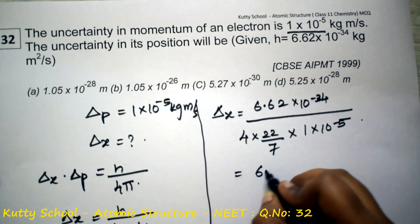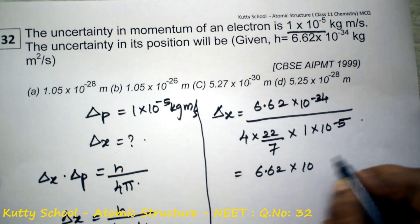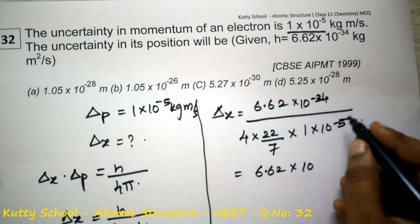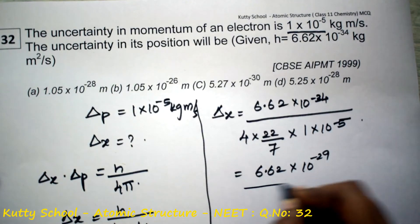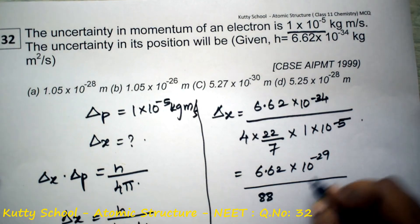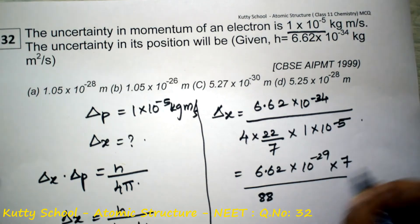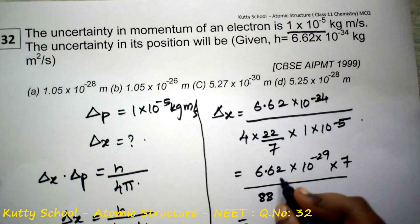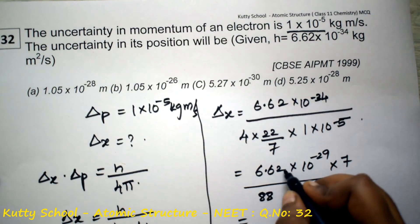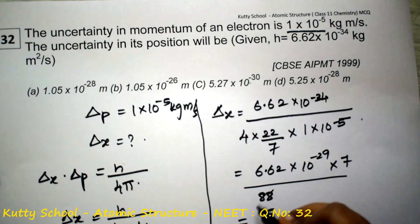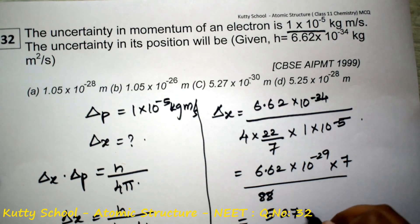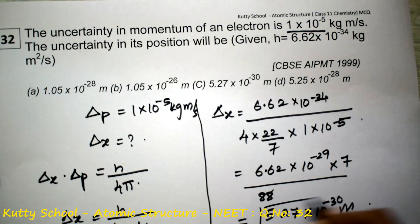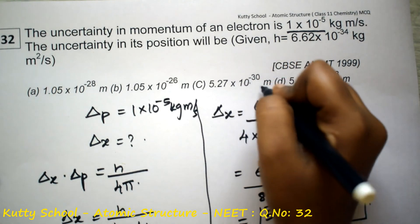Calculating: 6.62 × 10⁻³⁴⁺⁵ = 6.62 × 10⁻²⁹, divided by 88/7. After simplification, the answer is 5.27 × 10⁻³⁰ meters. So Δx = 5.27 × 10⁻³⁰ meters is the final answer.